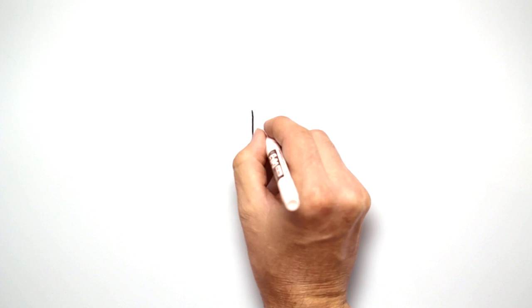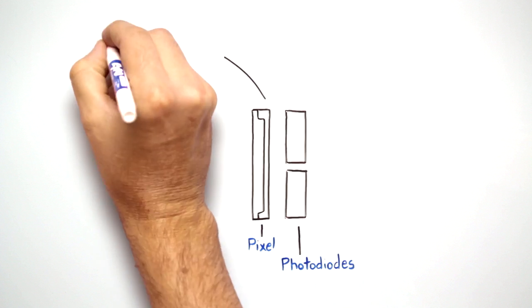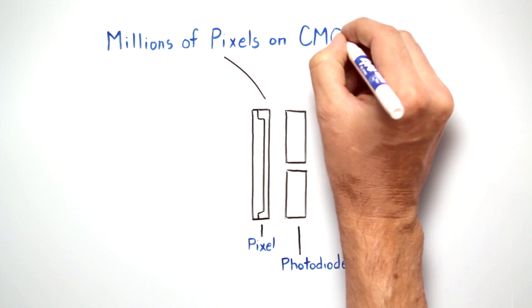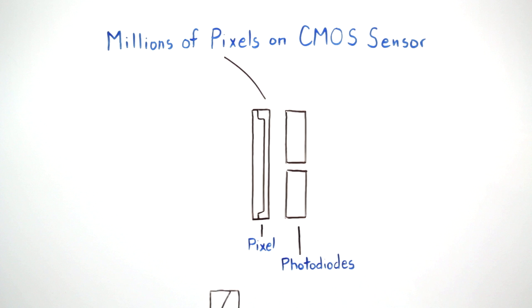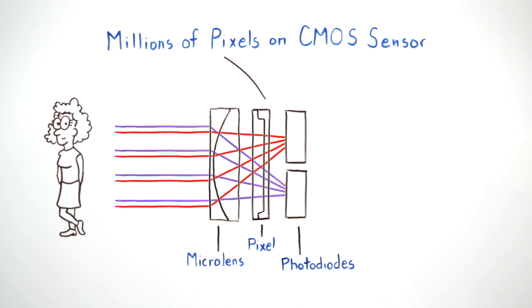The key to this capability stems from each pixel having not one, but two light sensing photodiodes. The optical image is projected onto the millions of pixels of the image sensor, each pixel having a tiny microlens that focuses the light samples onto the two photodiodes.